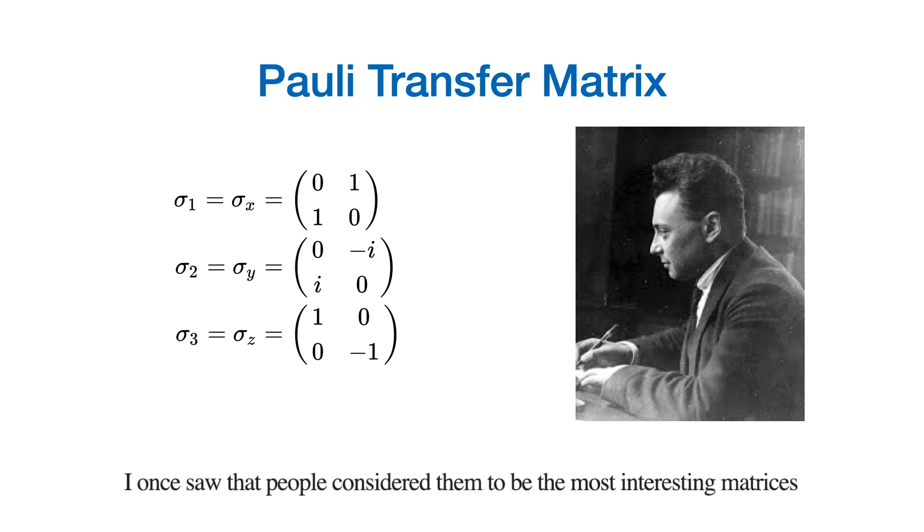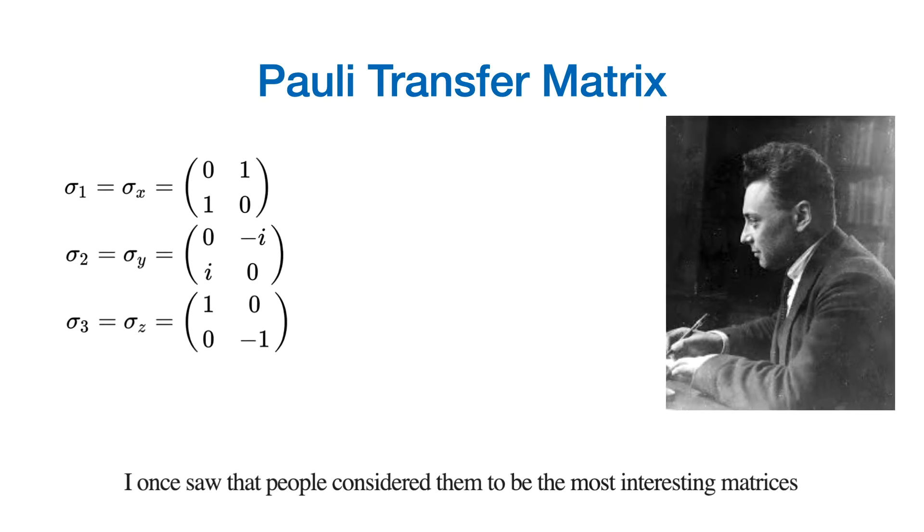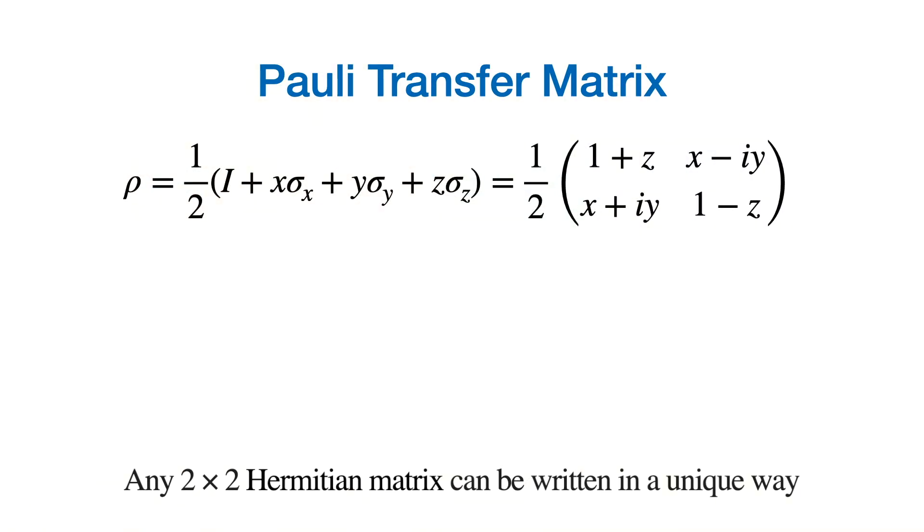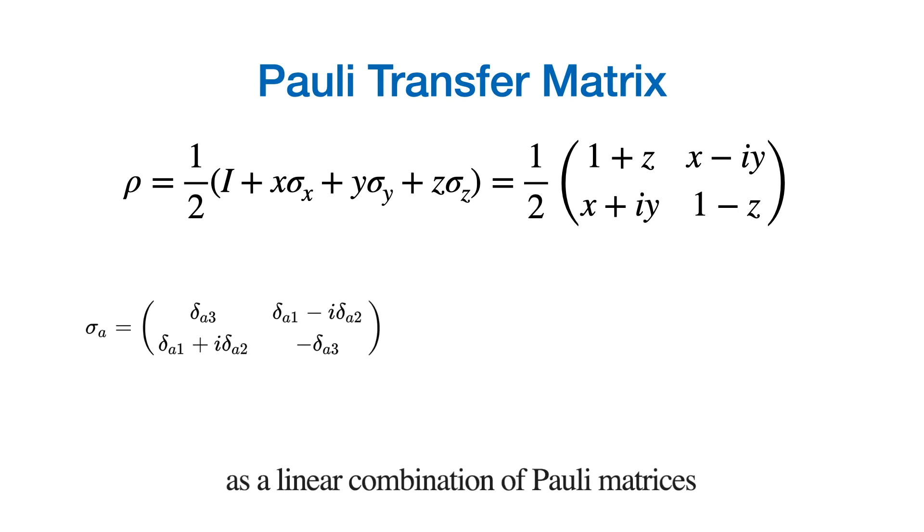I once saw that people consider them to be the most interesting matrices. Any 2 by 2 Hermitian matrix can be written in a unique way as a linear combination of Pauli matrices, with all coefficients being real numbers.